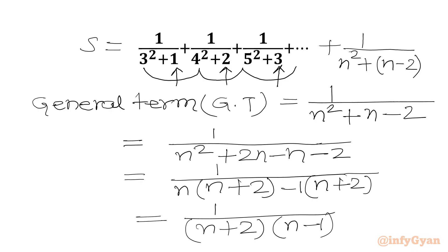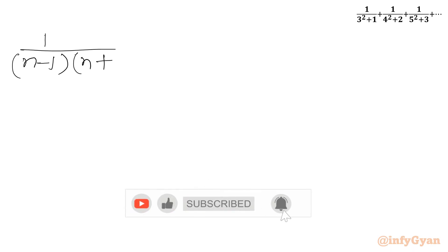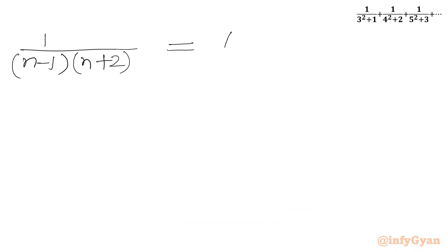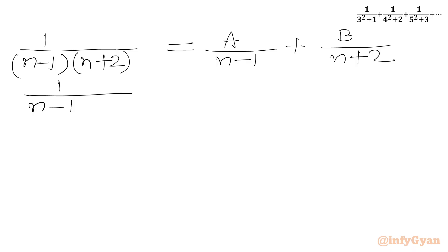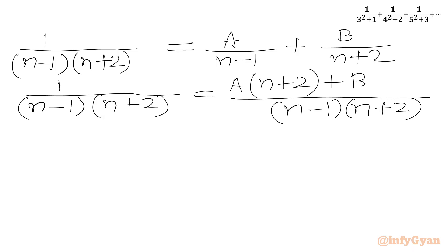Now we will use partial fractions to split this product. We write 1/[(n-1)(n+2)] = A/(n-1) + B/(n+2). Taking LCM on the right-hand side, the denominator is (n-1)(n+2) and the numerator becomes A(n+2) + B(n-1).